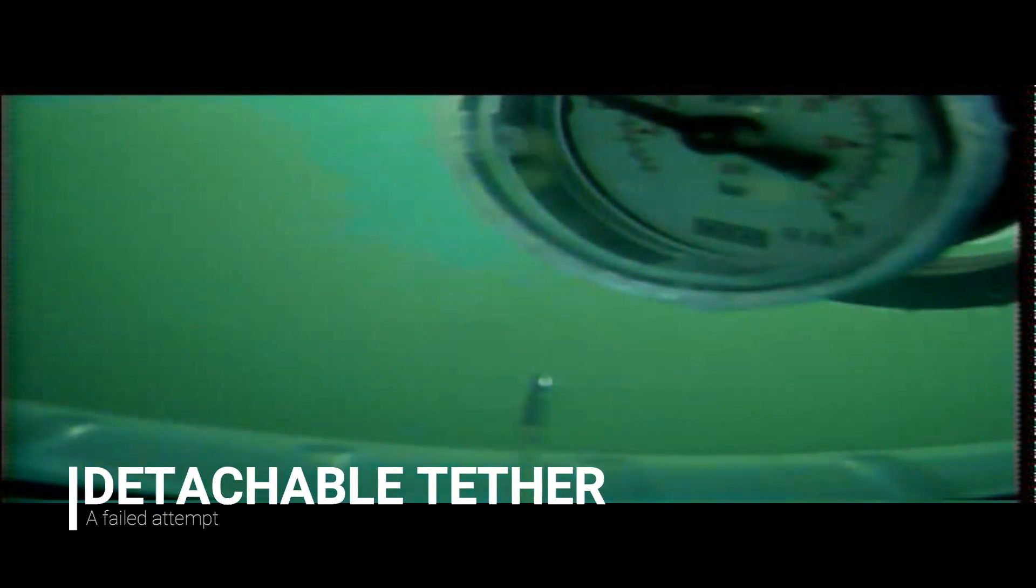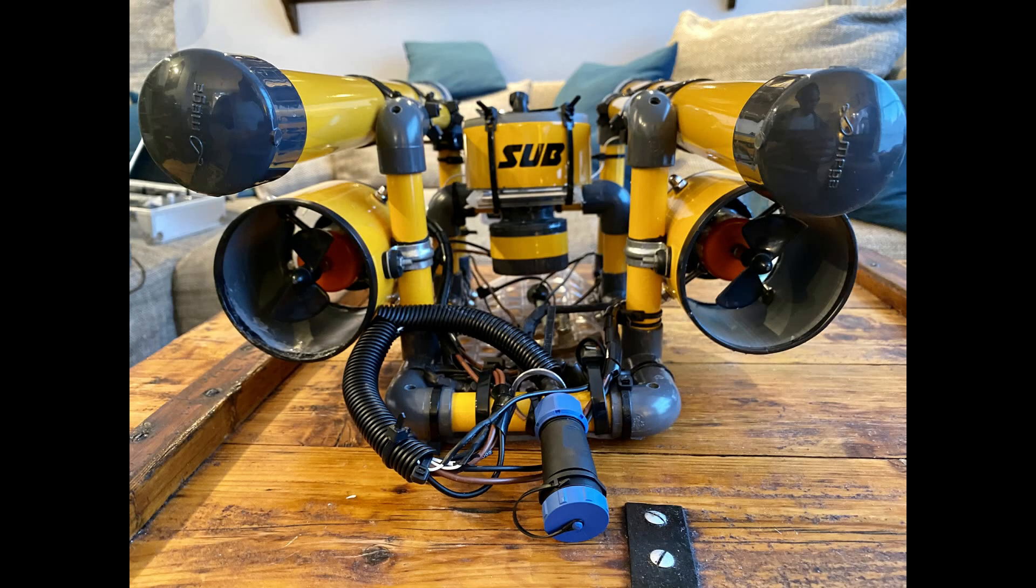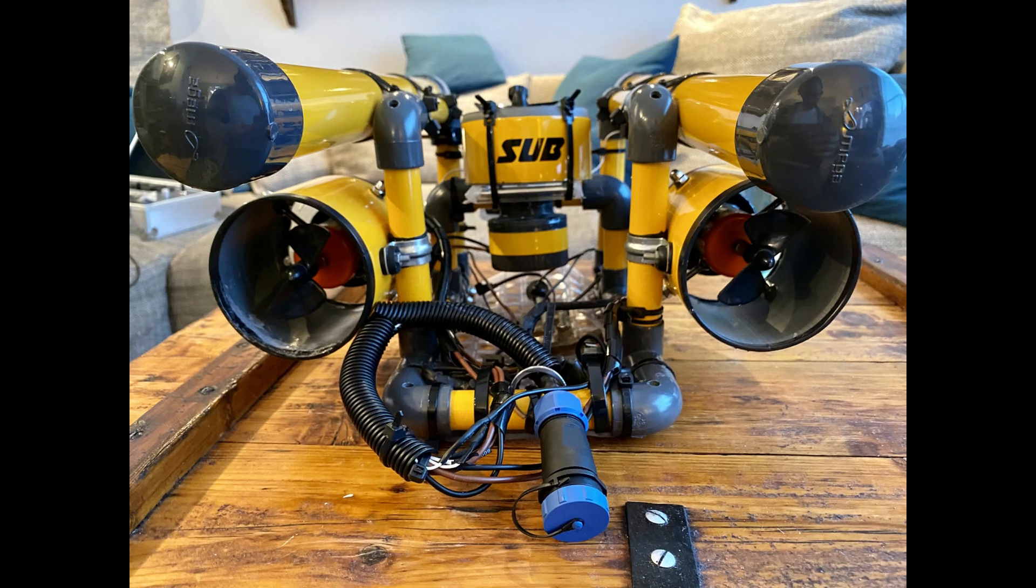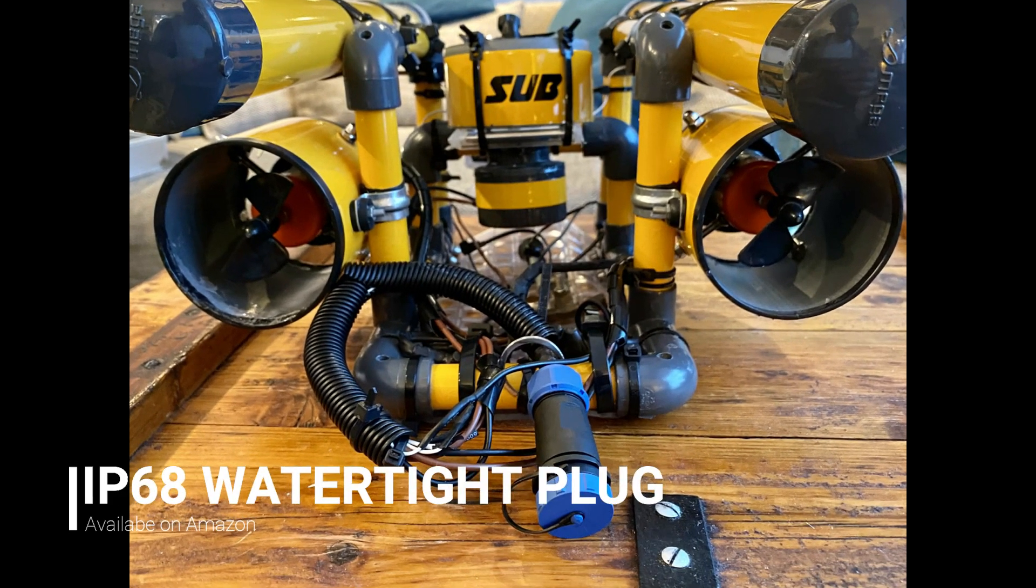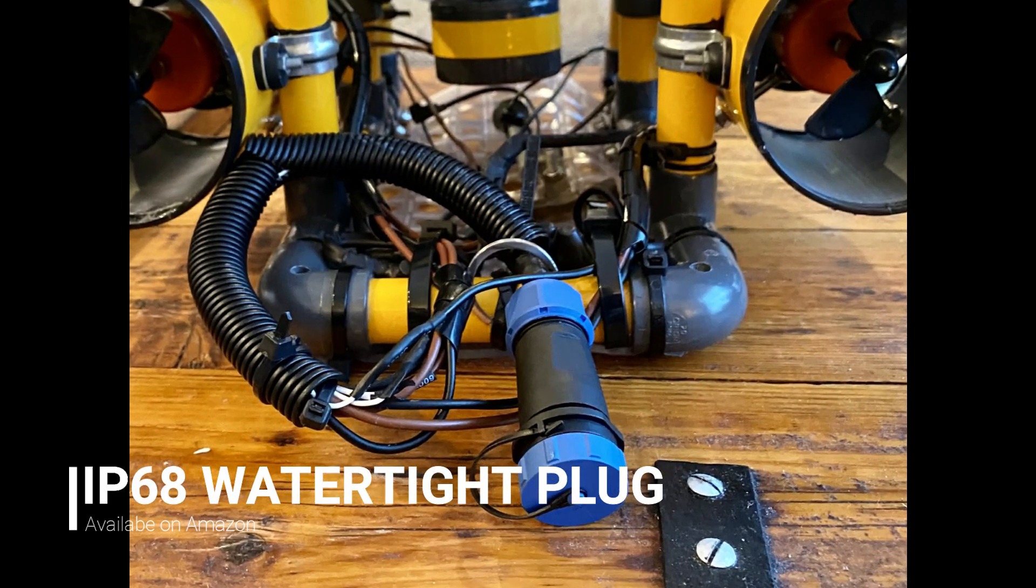Now, I didn't stop there, I wanted to make this tether also detachable. That's where the unsuccessful story starts. So, I went on Amazon and got myself an IP68 aviation water plug. The benefit of having a water plug here is that if you have a detachable tether, that's a great increase in mobility. You have the tether on one case and the ROV on another.